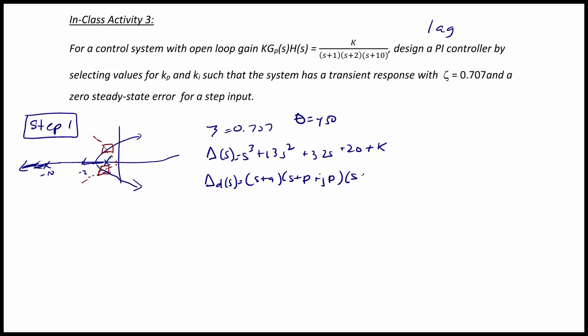Our desired characteristic equation is s³ + (2p+a)s² + (2p²+2ap)s + 2p²a. When we solve the system of equations, we get that K = 18.8, and the poles are at -1.376 ± j1.376 and -10.25.